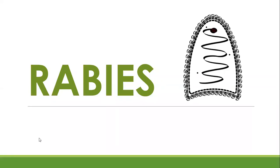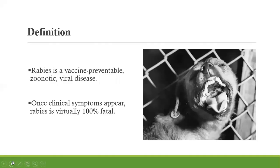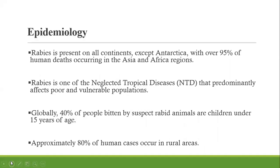Today we're going to look at rabies — we'll define it, look at epidemiology, transmission, pathophysiology, up until prevention and control. Rabies is a vaccine-preventable disease that is zoonotic, mostly passed on from animals. Once the signs and symptoms start manifesting, we normally have almost 100% fatality rate.